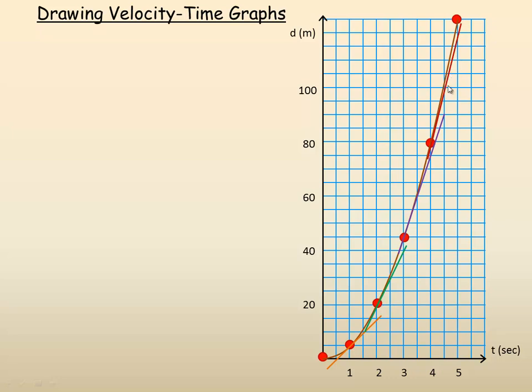It gets a little tricky when the graph gets really steep, but again, this line that I just drew just touches there. The green one is probably a good example, or the brown-orange one here is supposed to just touch at that one spot. So I drew all my tangents at 1, 2, 3, and 4 seconds. I could have drawn one at 5 as well. Now, as I said, this is really a slope calculation.